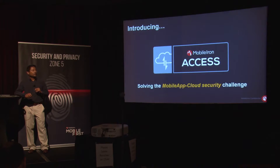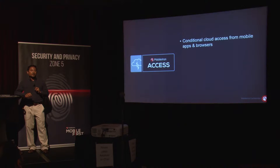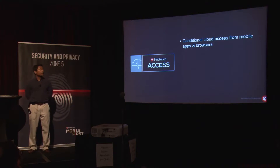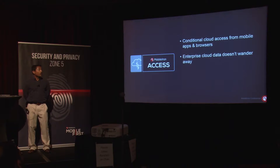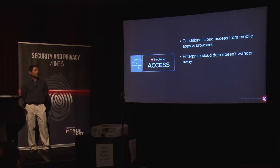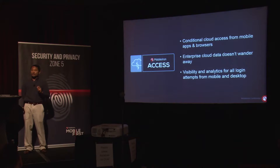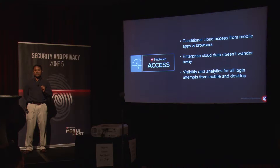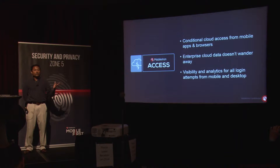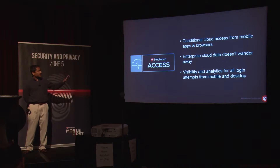Introducing MobileIron Access. It solves the mobile app to cloud security challenge by providing conditional access to your cloud services from mobile apps and browsers. The challenge was data going down to apps and your data wandering away — that's the problem MobileIron Access solves. Also very importantly, it gives you visibility and analytics: you can find out which users from which devices using which applications are getting to your cloud services. Before, everything was within your enterprise network; now the devices and applications are outside your network. MobileIron Access tells you who's accessing what from where and under what condition.